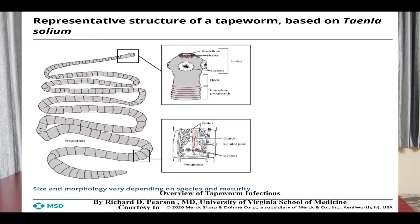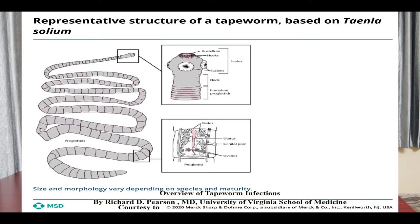At the apex of the scolex is a dome-shaped rostellum armed with 28 to 32 curved hooks arranged in two circles. Around the sides of the scolex are four large suckers. The suckers are devoid of hooks.